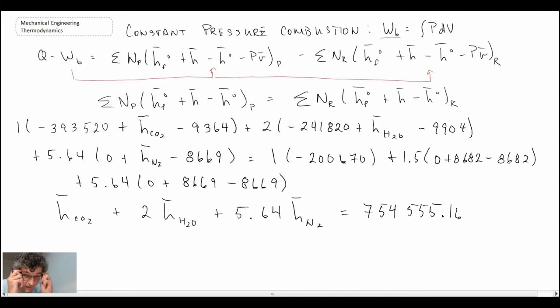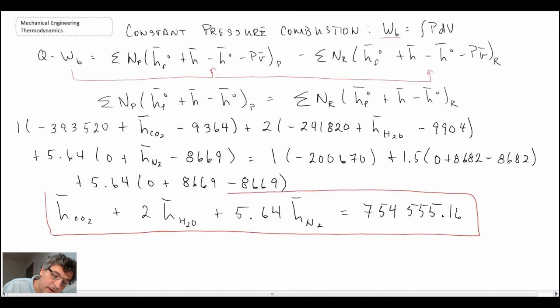So that's the equation that we get for the first law. And you'll notice, again, we do not know the temperature of the products, and consequently we have to leave the enthalpy values on a per kilomole basis for CO2, H2O, and N2 as being unknown. And then we have to do trial and error subbing values in and seeing how close we get to this value on the right-hand side of the equation. So we'll proceed and do the trial and error approach.